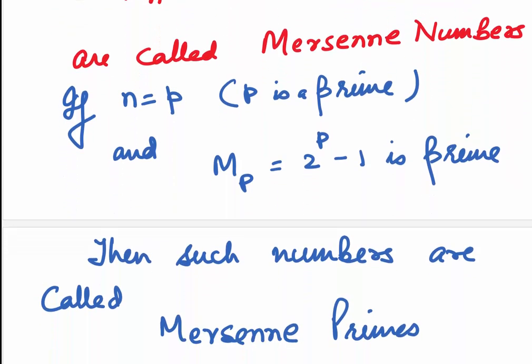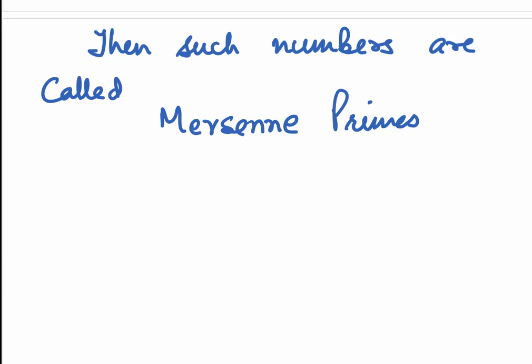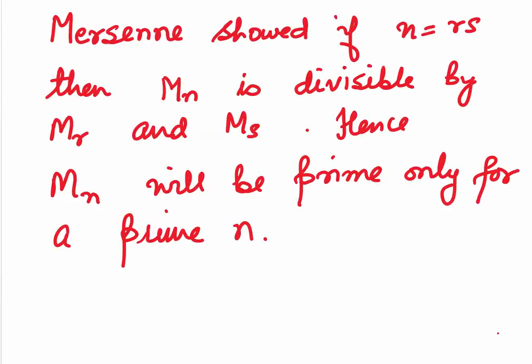Mersenne showed if n is composite, say n is r into s, then the Mersenne number Mn is divisible by Mr and Ms. Hence, Mn will be prime only for a prime n.